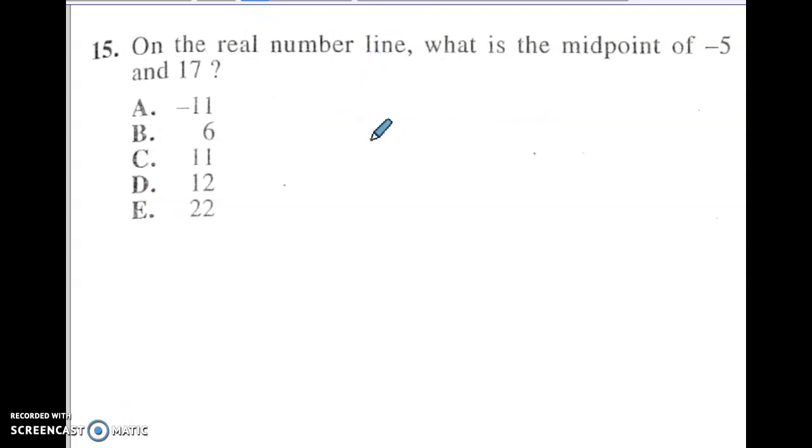All right. Again, pause it, give it a shot. Good point for this is to draw a visual if you're not sure. All right. So we've got 0, we've got negative 5, and we've got 17. And we want to find the midpoint, so it's halfway. We know it's somewhere in here. Basically, the midpoint, if you ever have to do a midpoint, you just add them together and divide by 2. So here it's going to be 12 divided by 2, and the midpoint is going to be 6. So visually, it's going to be right about there. It just looks about halfway between them, letter B.